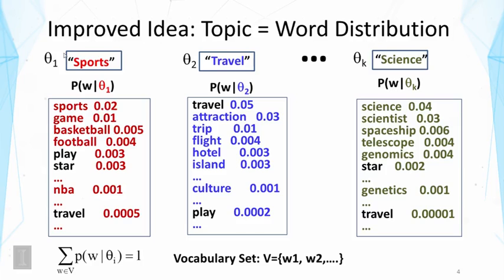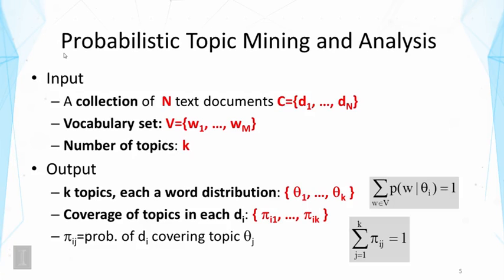This representation addresses all three problems mentioned earlier. First, it uses multiple words to describe a topic, allowing fairly complicated topics to be described. Second, it assigns weights to terms, so we can model subtle semantic differences and bring in related words together. Third, because we have probabilities for the same word in different topics, we can disambiguate the sense of a word in text to decode its underlying topic. Our problem definition has now been refined — each topic is a word distribution.